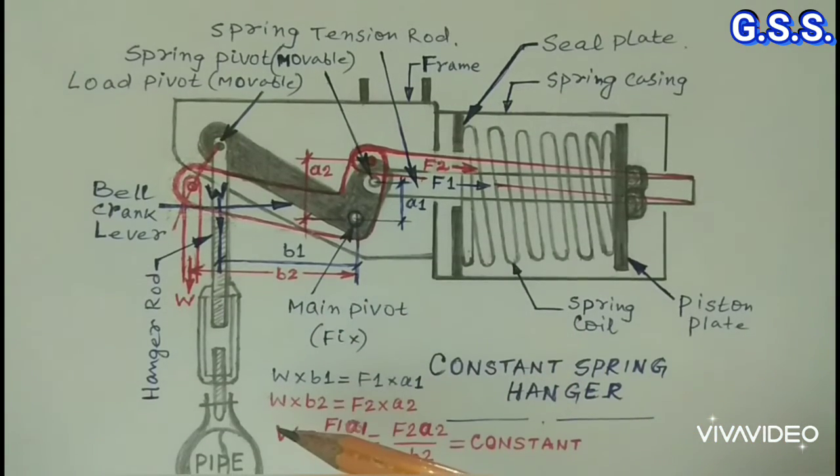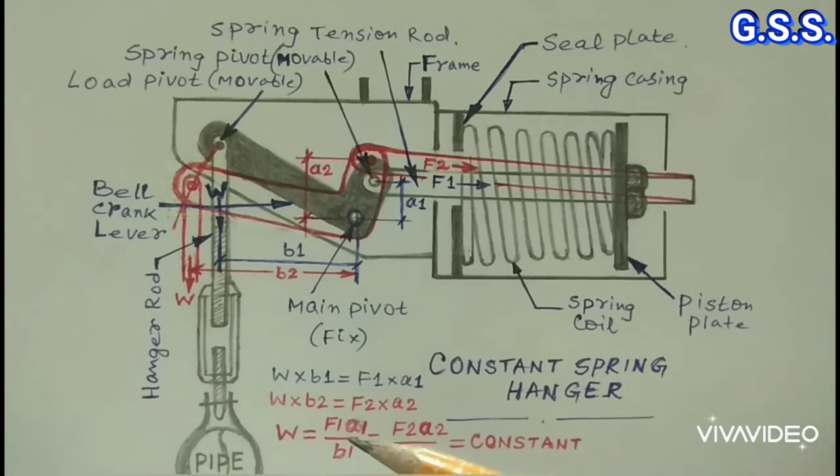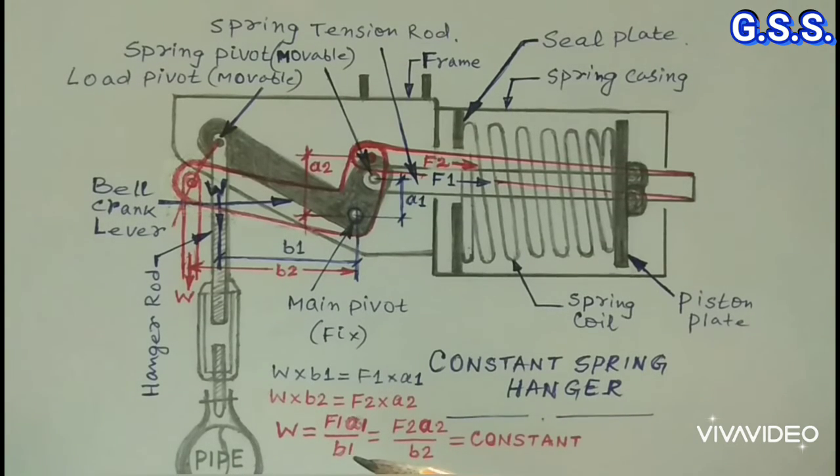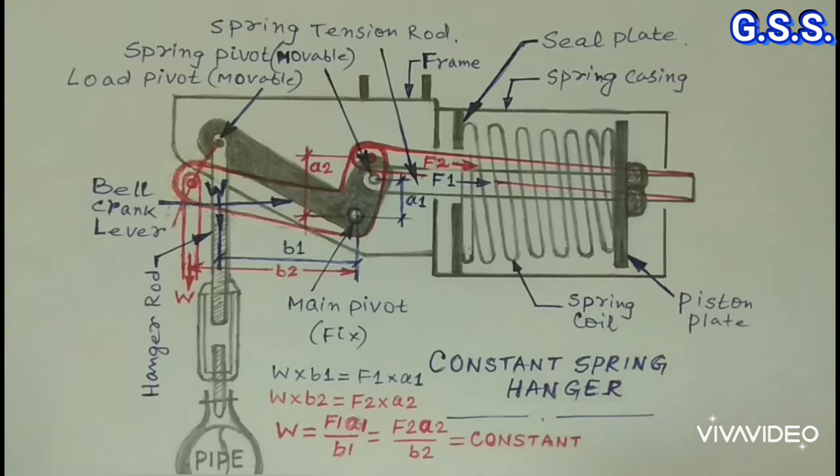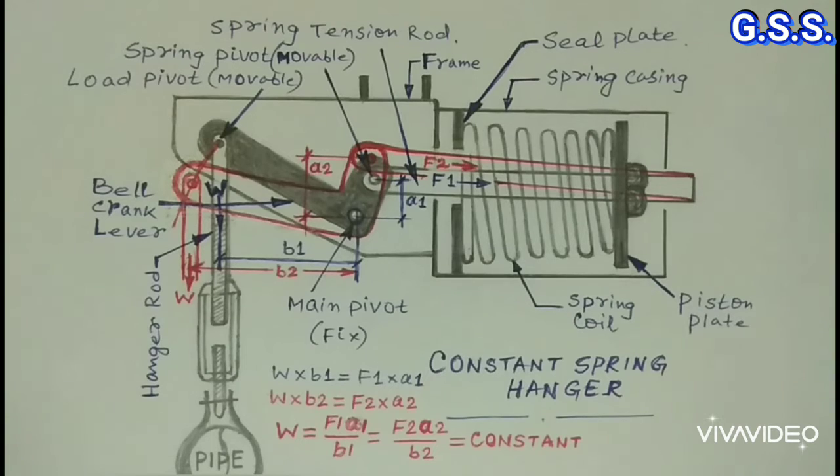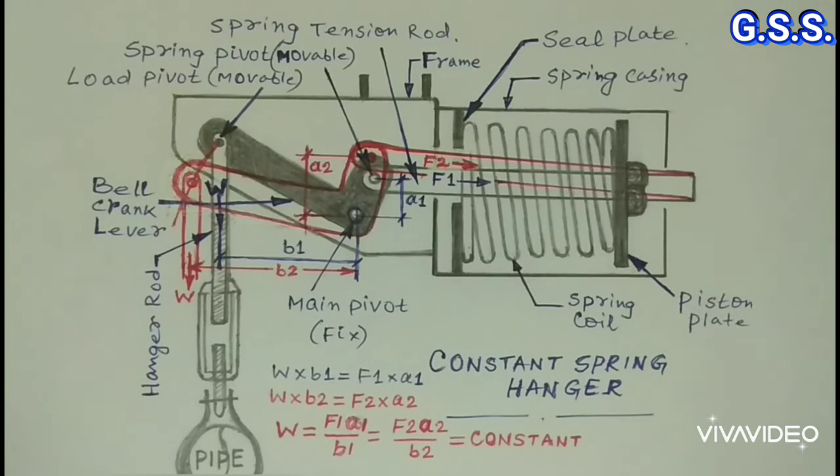Then, in the changed position of the bell crank lever, W times V2 equals F2 times A2. So W equals F1 times A1 divided by V1, which equals F2 times A2 divided by V2. In this way, at any vertical movement of the pipeline, constant spring support provides constant effort W.